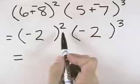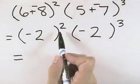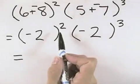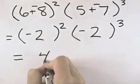So looking at that, negative 2 squared means negative 2 times negative 2. And two negatives make a positive, and 2 times 2 is 4, so that gives us positive 4.